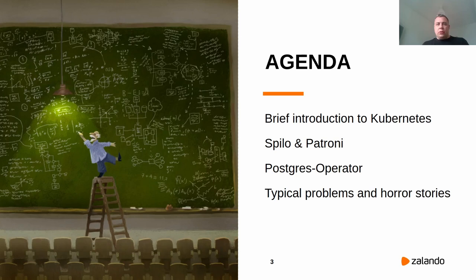The agenda of today's talk: first, I will give a brief introduction to Kubernetes, then I will explain how we use Spilo and Patroni to deploy and run highly available Postgres clusters on Kubernetes. After that, I will explain how the Zalando Postgres operator helps us do high-level orchestration of such deployments. And finally, I will go through a list of typical problems and horror stories we hit by running a few hundred production deployments.